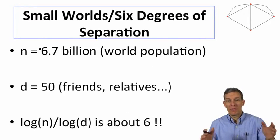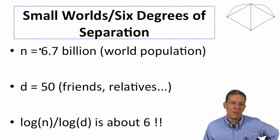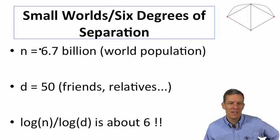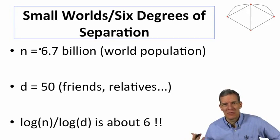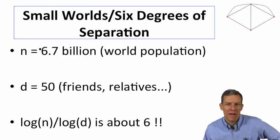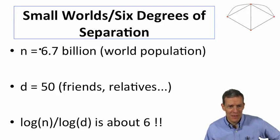And let's do a rough back-of-the-envelope calculation so you can pull out your calculators. Say that the world population these days is somewhere between 6 and 7 billion. Let's take 6.7 billion as an estimate. And let's suppose that you just count friends that you talk to on a reasonably regular basis, so friends, relatives.